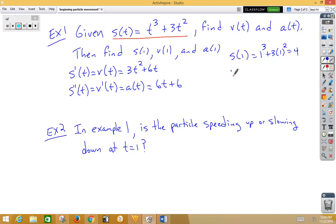V(1) would be plugging into our derivative of s(t), which was 3t² + 6t. So 3 times 1² plus 6 times 1 would be 9. So since that's a positive value, we now know that Pete is traveling to the right at time 1.